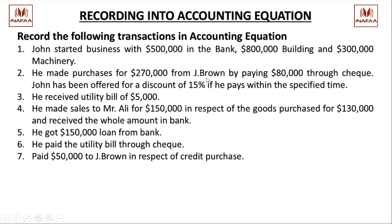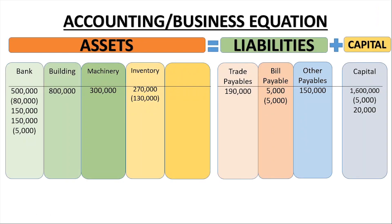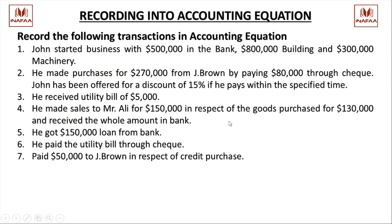Next transaction: $50,000 paid to Jay Brown against the credit purchase. We originally owed $190,000 to Jay Brown; now $50,000 is paid, so bank decreases by $50,000 and the trade payable liability also decreases by $50,000.